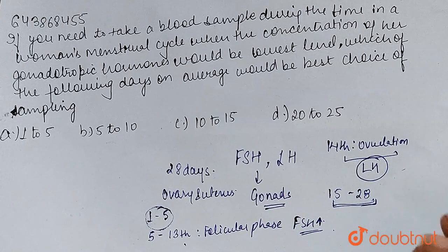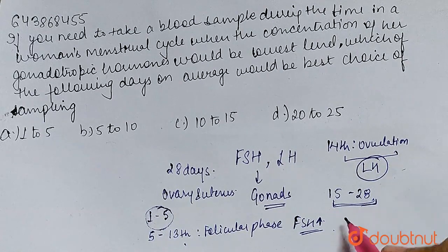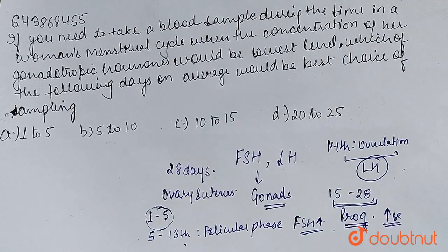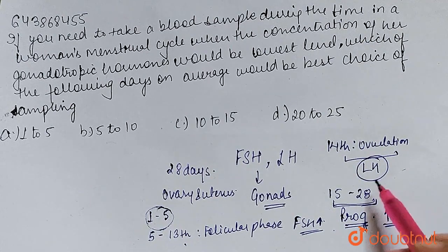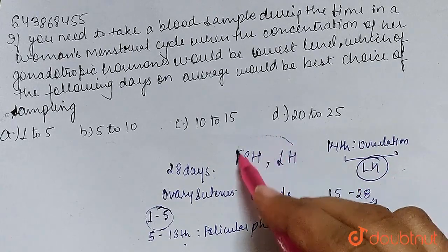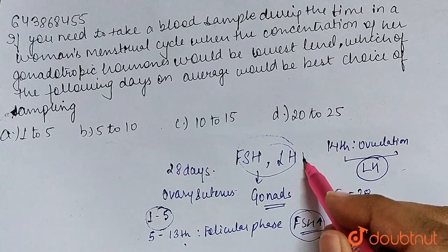The Graafian follicle is the most mature follicle. The remnants of the Graafian follicle are called the corpus luteum. At this stage, our progesterone hormone and estrogen are at their highest levels, while our gonadotropins — FSH and LH — are at their lowest levels.